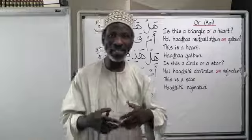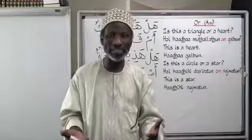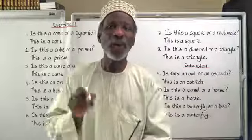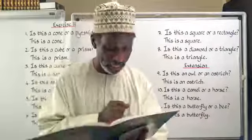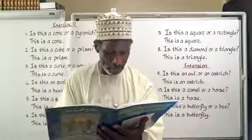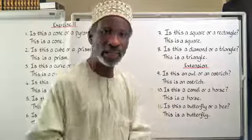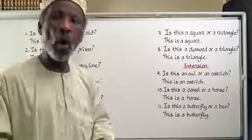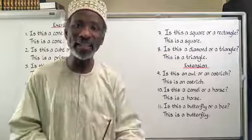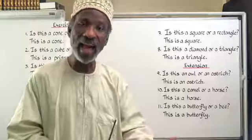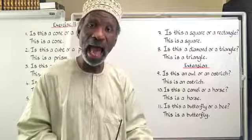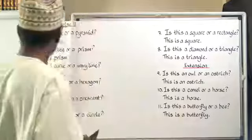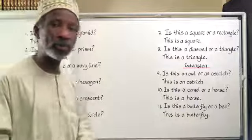So 'or' in Arabic is أَمْ. Let's do more exercise — exercise 11 together on page 13. Number 1: is this a cone or a pyramid? هَلْ هَذَا مَخْرُوتٌ أَمْ هَرَمٌ. This is a cone — هَذَا مَخْرُوتٌ.